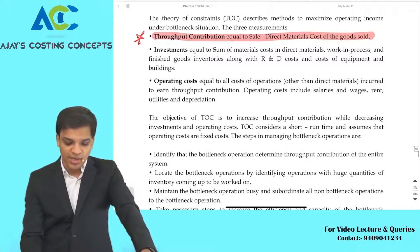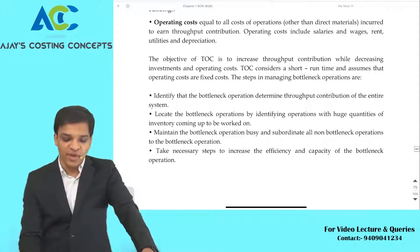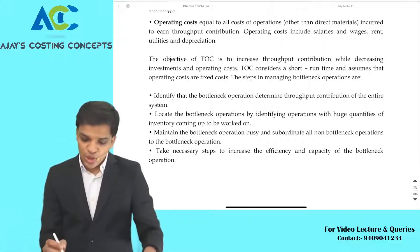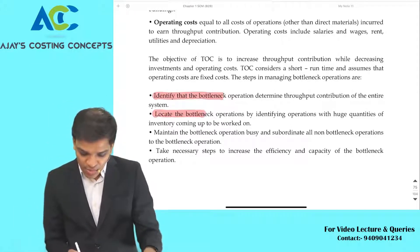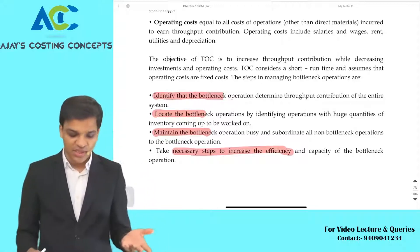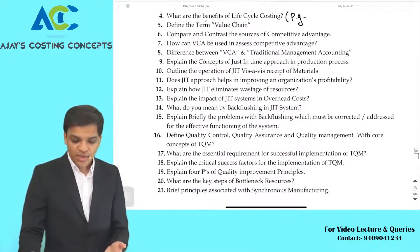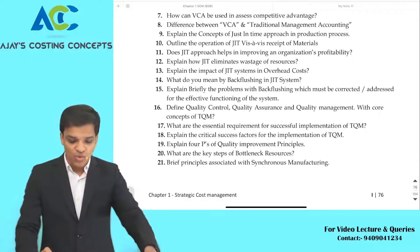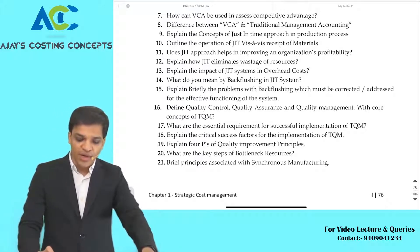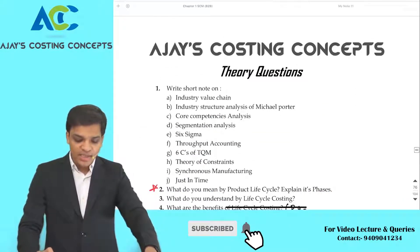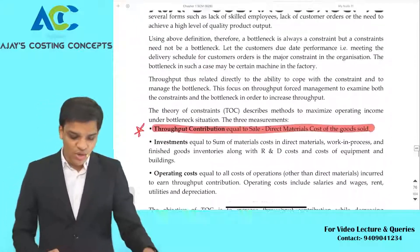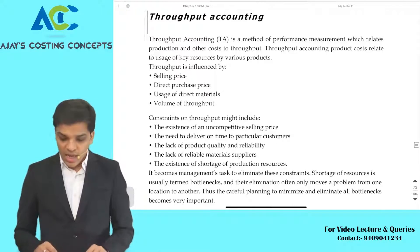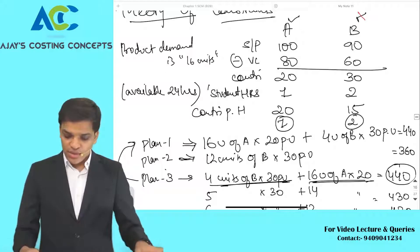Many students make errors on this formula. Objectives of theory of constraints: identify bottleneck operations, locate bottleneck operations, maintain bottleneck operations, take necessary steps to increase the efficiency of bottleneck operations. Remember these four important words: identify, locate, maintain, increase efficiency. These are the objectives of theory of constraints. The key steps of bottleneck resources, synchronizing manufacturing systems — all those quality management concepts like six C's and five T's — have already been covered.